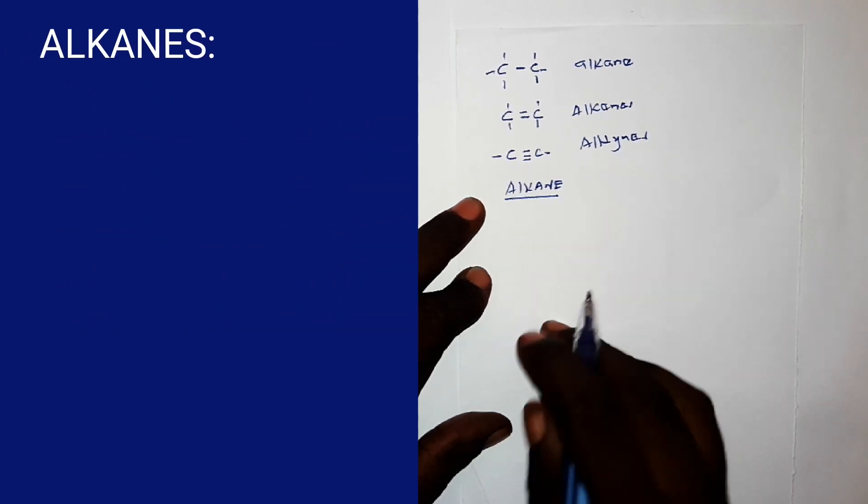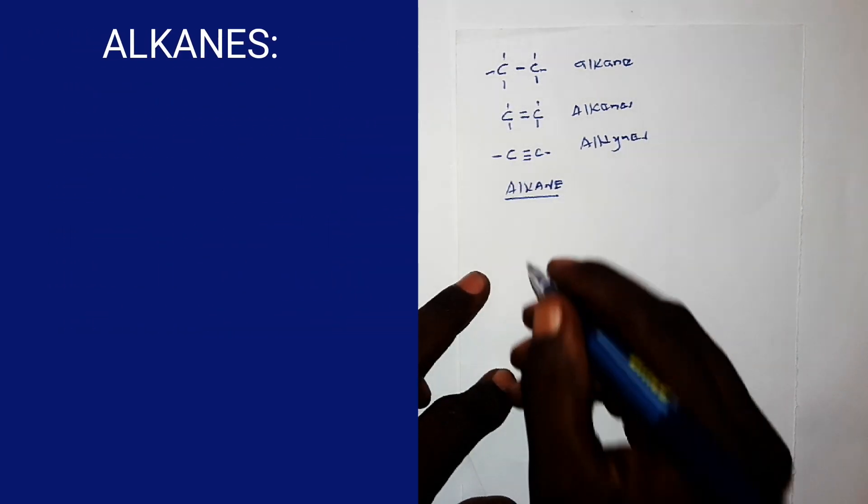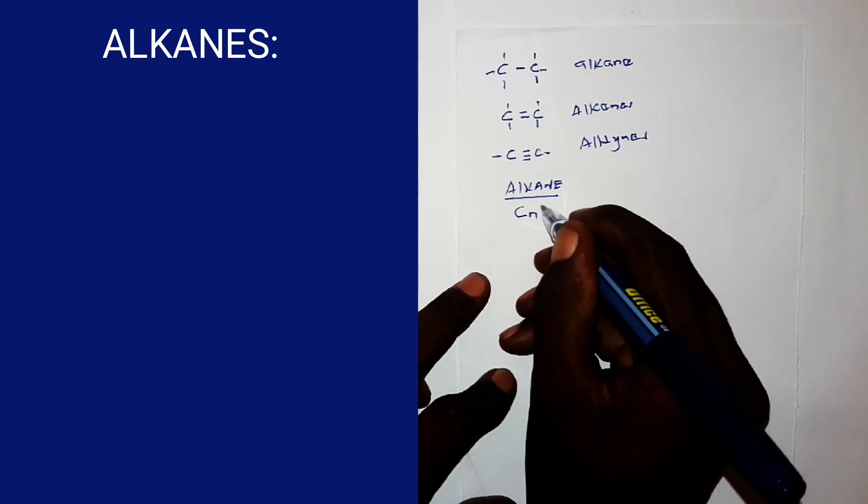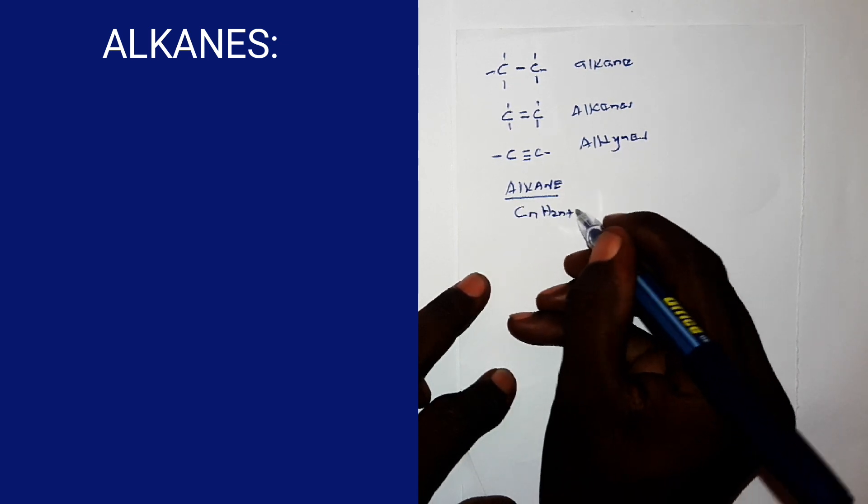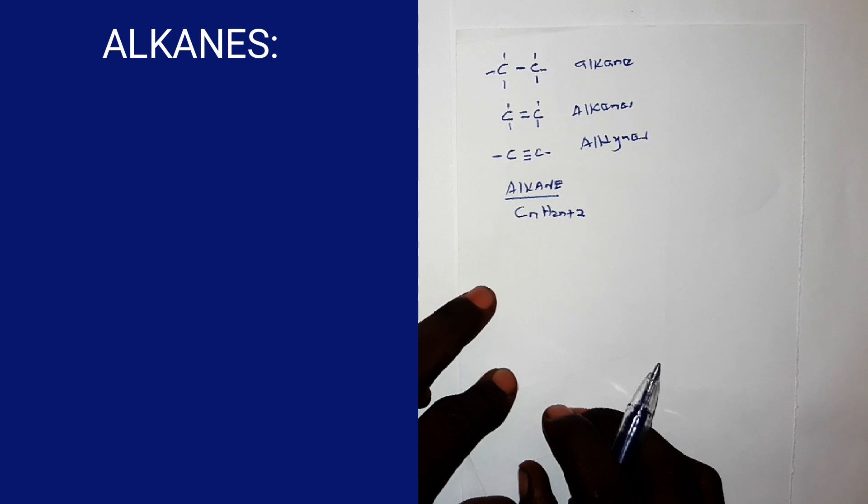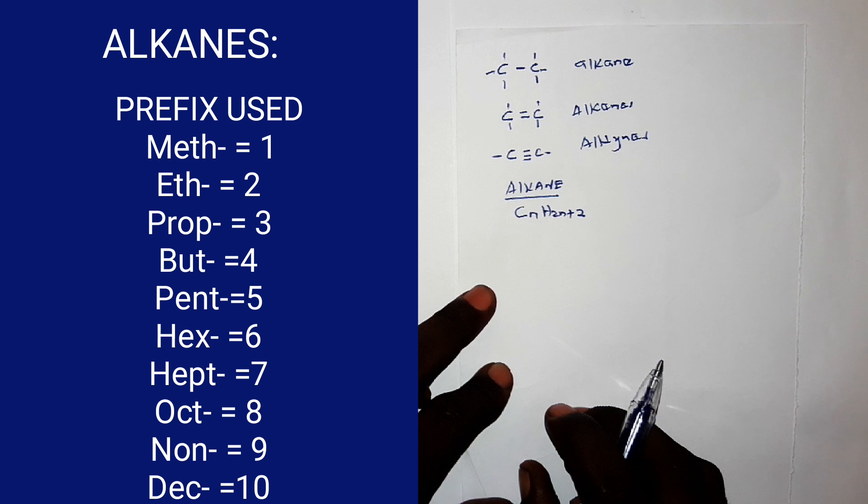Now, in the alkanes, we look at the general formula. The general formula is CnH2n plus 2, where n is the number of carbon atoms. Now, the number of carbon atoms of each alkane depends on the prefix. Now, when the prefix is meth, that is one carbon atom. Eth, that is two carbon atoms. Prop is three carbon atoms. But is four carbon atoms. And this is the last one which is dec, which has ten carbon atoms.